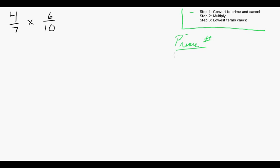In order to make our lives a little bit easier, I'm going to include the first few prime numbers: 2, 3, 5, 7, 11, and 13.